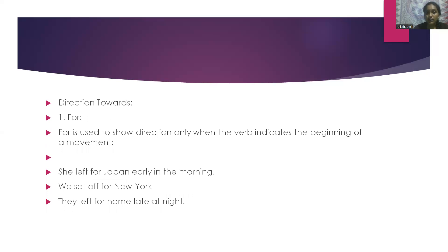The next type is direction towards. Under that comes the word 'for'. For is used to show direction only when the verb indicates the beginning of movement. For example: she left for Japan early in the morning. We set off for New York. They left for home late at night.